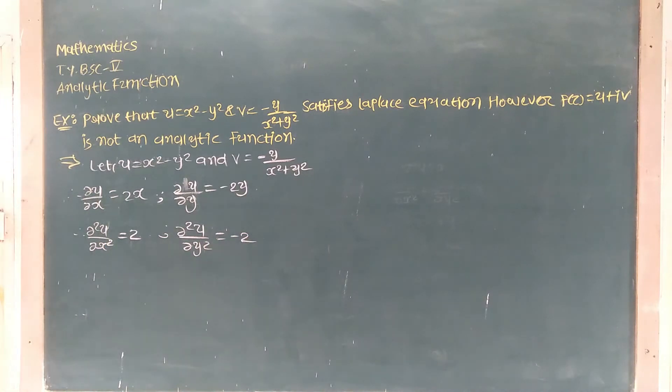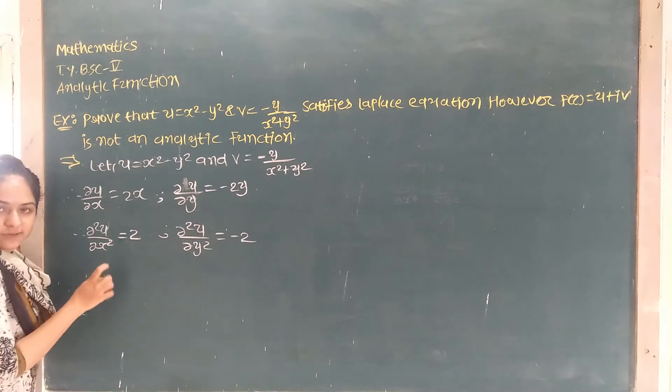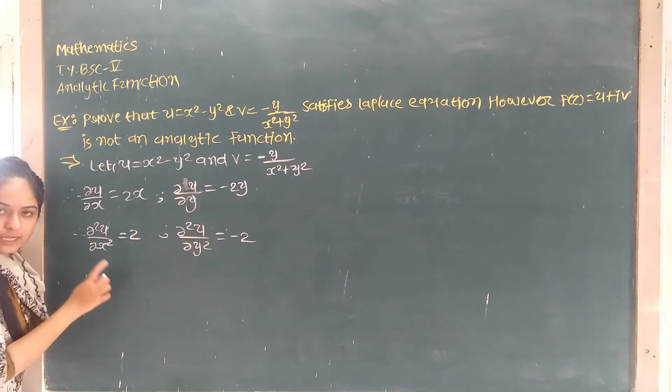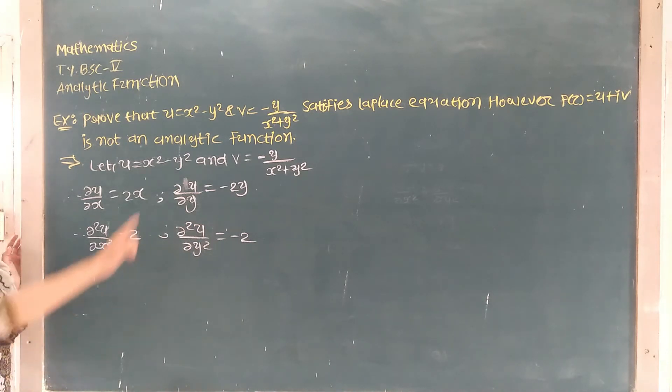Then del squared u over del x squared plus del squared u over del y squared: that is 2 minus 2, which is equal to 0. So the Laplace equation is satisfied.